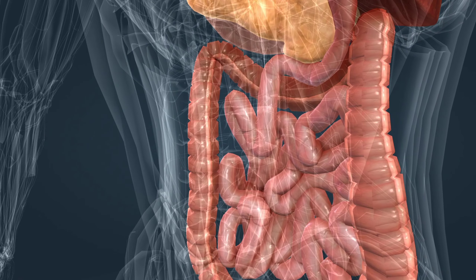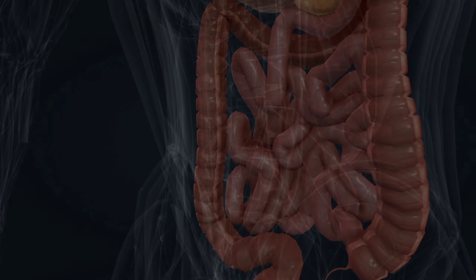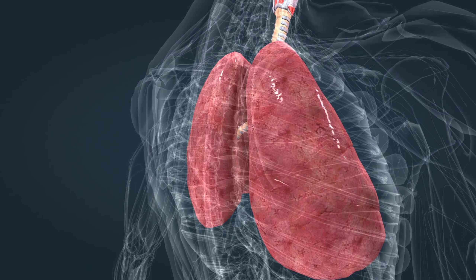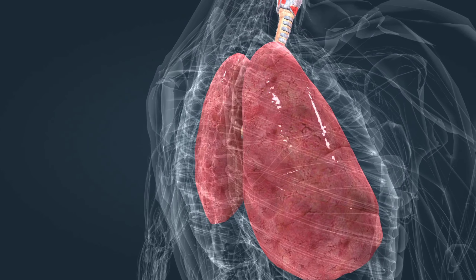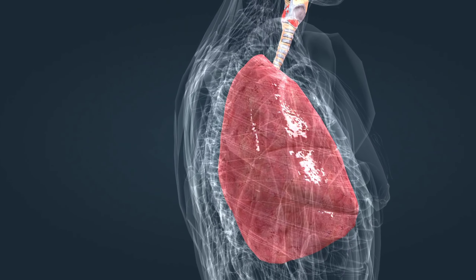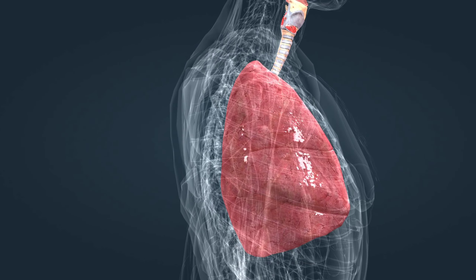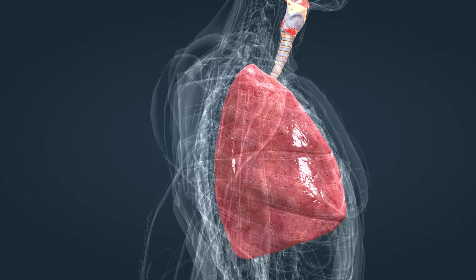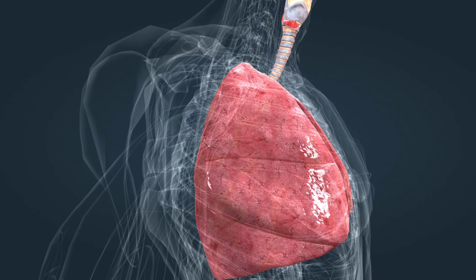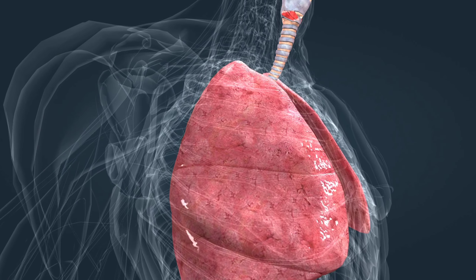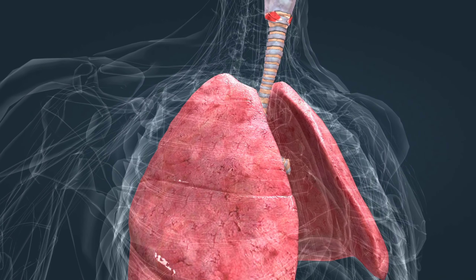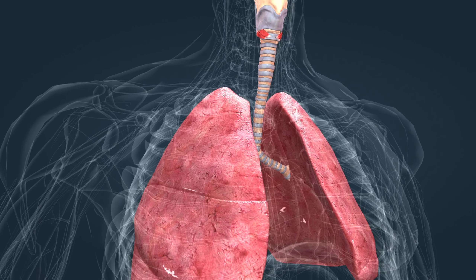Catabolic processes in our body require oxygen and produce carbon dioxide. The absorption of oxygen and release of carbon dioxide both take place in the lungs. In a relaxed state, we inhale about 16 times a minute and exchange about half a liter of air each time. Lung cancer is a serious illness of the lungs, and smoking greatly increases the chance of its development.